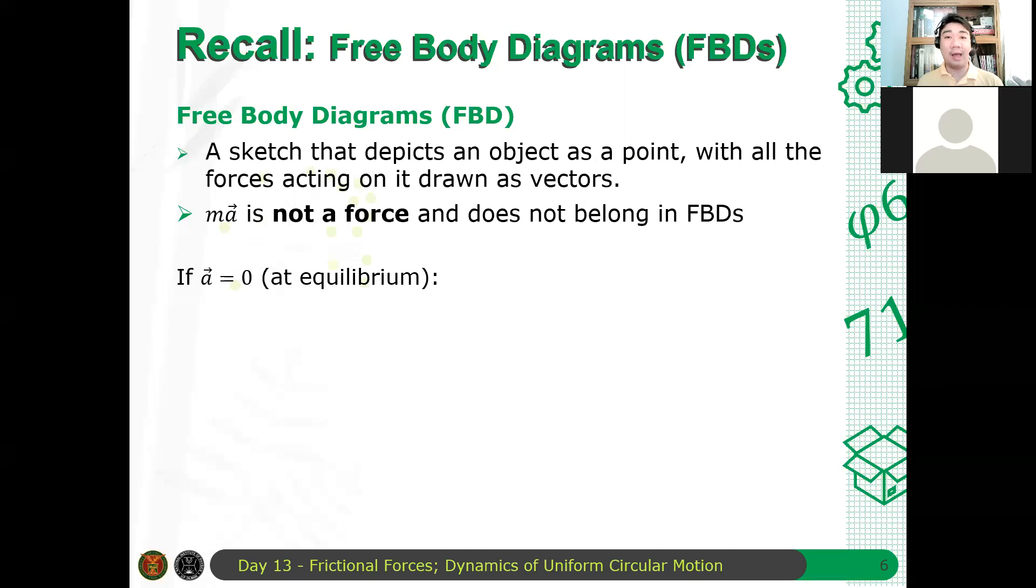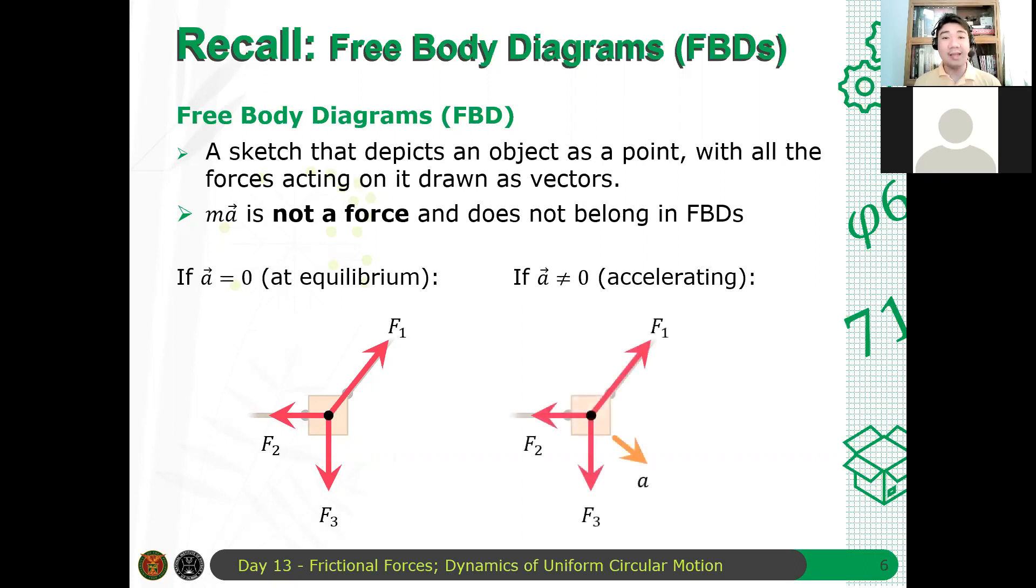For example, if the acceleration is zero, that is the particle is at rest or moving with constant velocity, then the free body diagram looks like this. However, if the acceleration is non-zero, the particle is accelerating, then the net sum of all forces is non-zero, and therefore you can arbitrarily set a particular direction of acceleration.